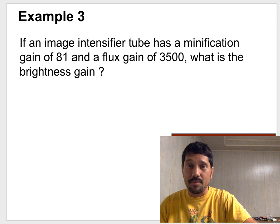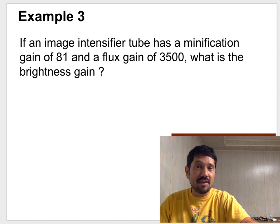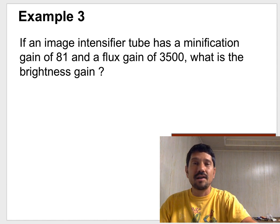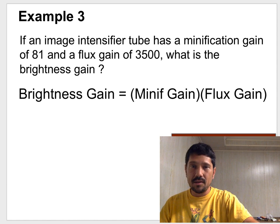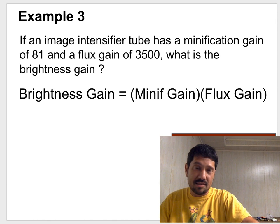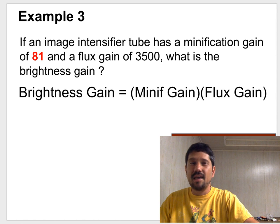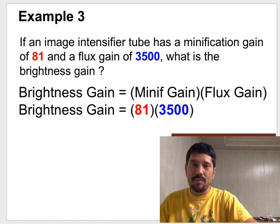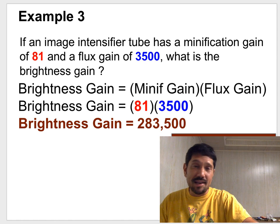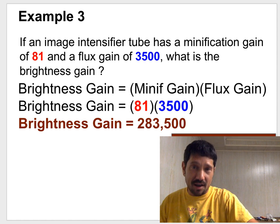So here's our last example. If an II has a minification gain of 81 and a flux gain of 3,500, what is the brightness gain? We would take our formula, and we would say 81 is minification, 3,500 is flux gain. We drop them in place and multiply them for an ugly number, 283,500.